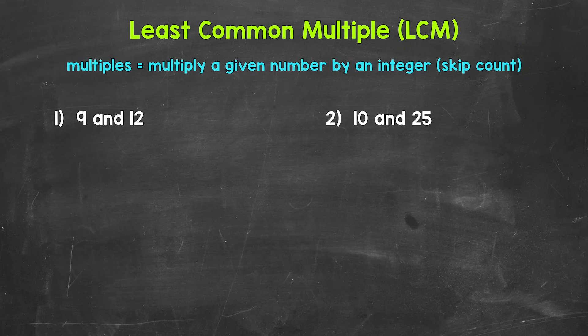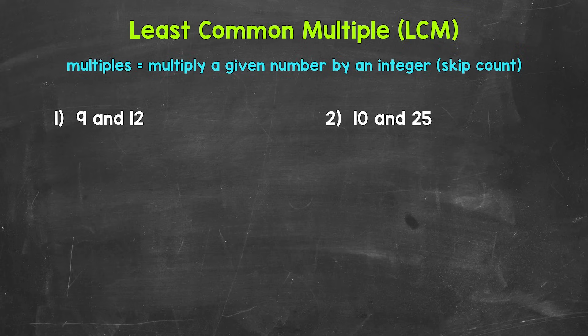We will start with the strategy of listing out some multiples of each number in order to find the least common multiple, and then we'll move on to using prime factorization. The least common multiple between numbers is going to be the smallest multiple in value that both numbers share. A multiple is the result of multiplying a given number by an integer. A simpler way to think about multiples is skip counting — all of the numbers something hits when you count up by that number are multiples.